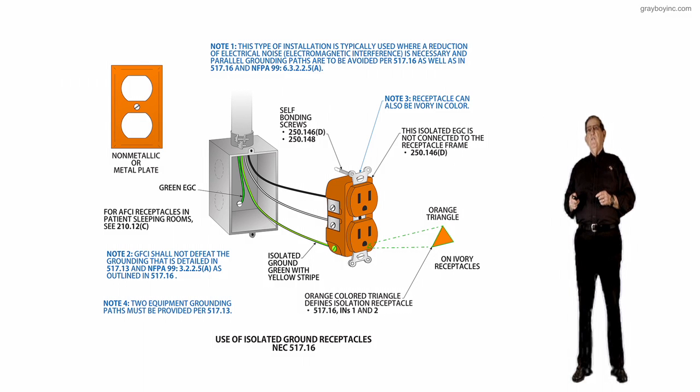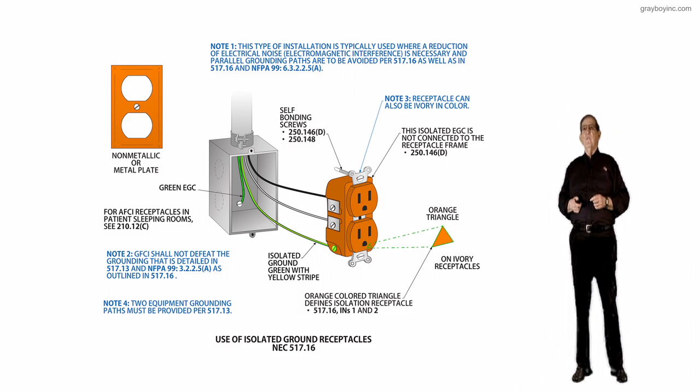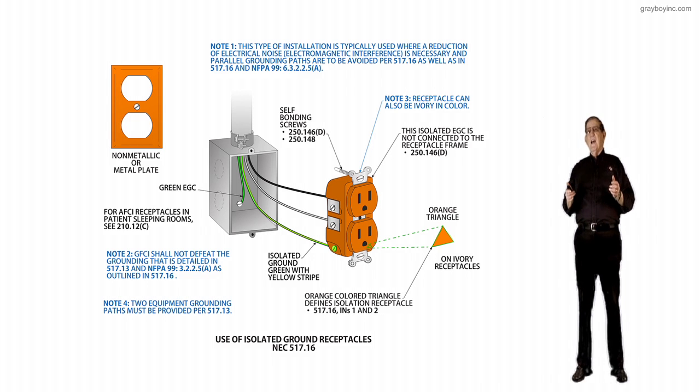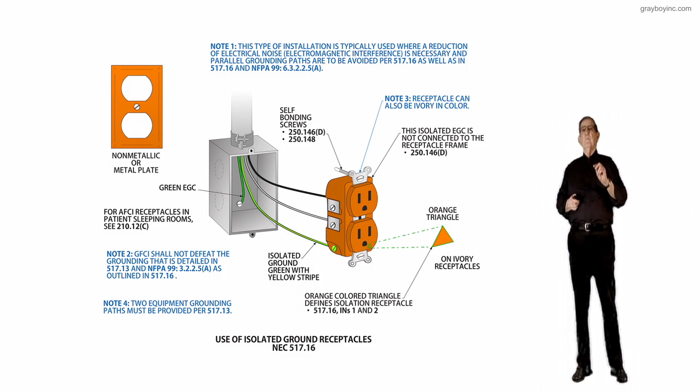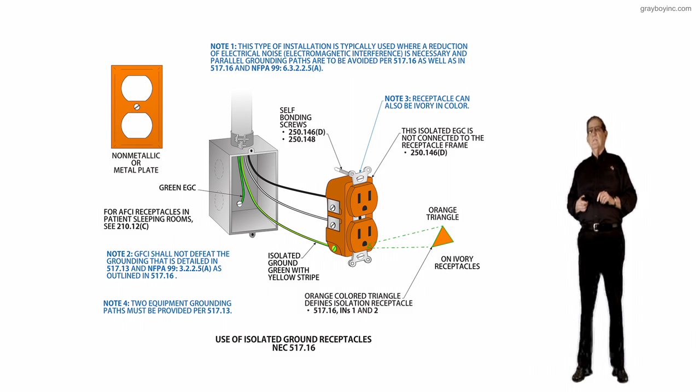If we review the isolation equipment grounding conductor, it's not connected to the receptacle frame. You see that pointing to the receptacle, the yoke, and so forth. This provides the isolation of the equipment connected to that receptacle, but it doesn't provide the redundant grounding required in Section 517.13 for receptacles installed in patient care areas.